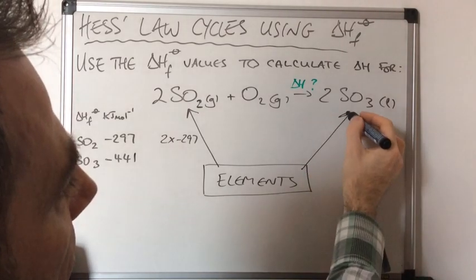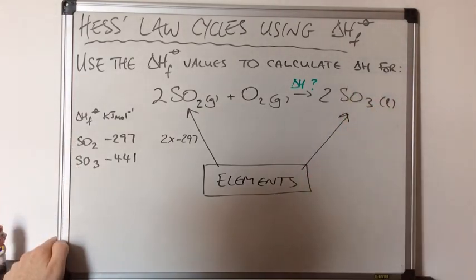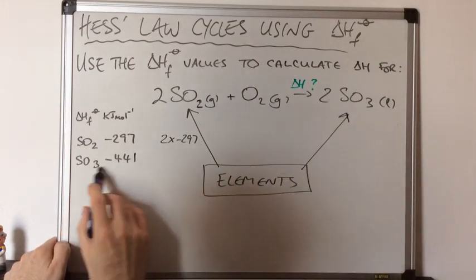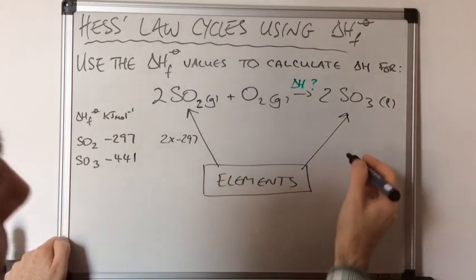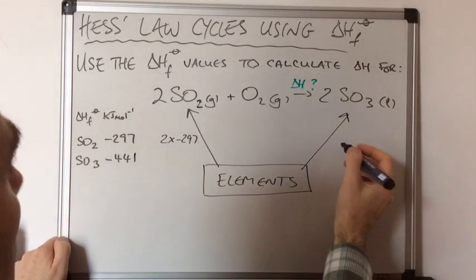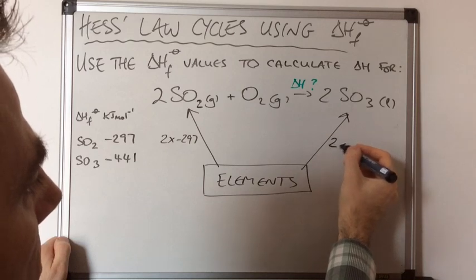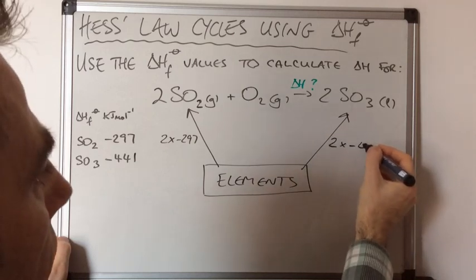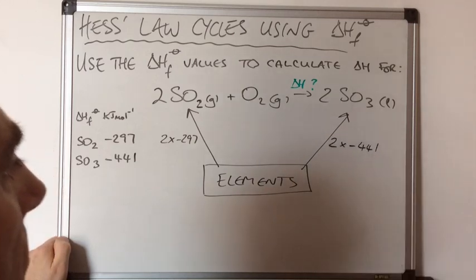We'll connect the elements box to the two SO₃'s now. The value for formation of one SO₃ is minus 441 kJ/mol, so for two moles that's going to be two times minus 441 kJ/mol.